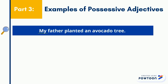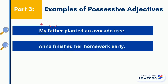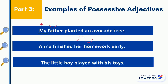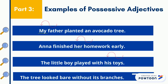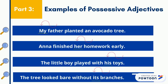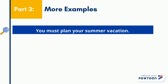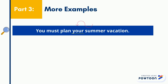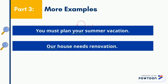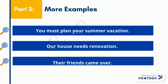My father planted an avocado tree. Anna finished her homework early. The little boy played with his toys. The tree looked bare without its branches. You must plan your summer vacation. Our house needs renovation. Their friends came over.